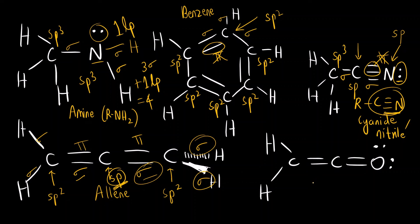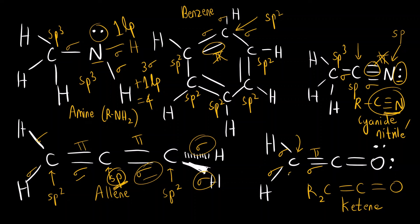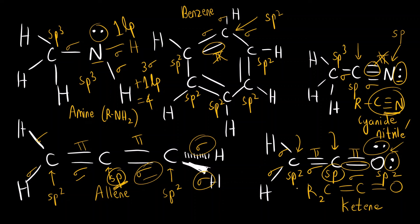For the ketene functional group (R₂C=C=O), the terminal carbon has three sigma bonds — sp2. The oxygen has two lone pairs plus one sigma bond — also sp2. The central carbon, just like in allene, forms only two sigma bonds — sp hybridization. This covers almost all functional groups. I hope you now understand how to find hybridization in organic compounds. Thank you.